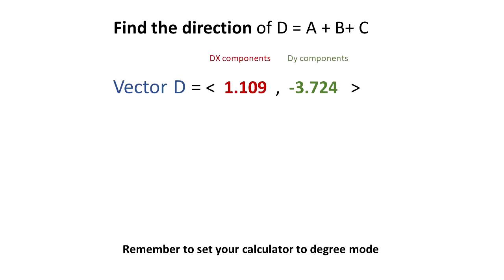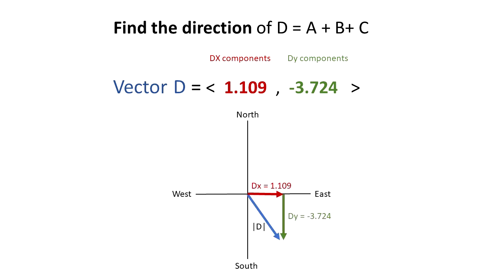Finally, we have to find the direction of the resultant vector D. Starting from the components x and y, we're going to draw in the Cartesian plane how the vector will be. The Dx component is positive and the Dy component is negative. The red arrow represents Dx and the green arrow represents Dy, and the blue arrow is the magnitude of vector D.